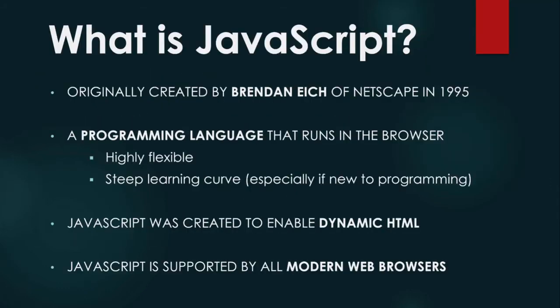JavaScript is a programming language that is special because it was designed to run in internet browsers — it's a programming language for the internet. It was developed in the mid-90s in just one week, in fact, and it's come a long way since then. It's not as basic as it used to be, but its main function is still the same: it was created to enable dynamic HTML.